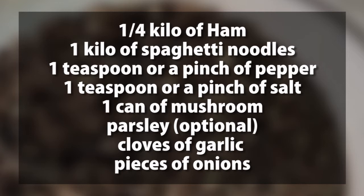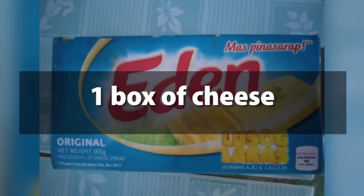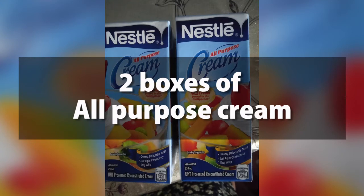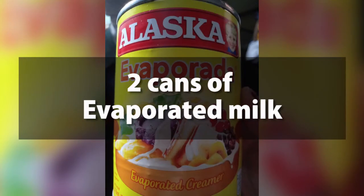We also have parsley — optional if you can find it in the market — cloves of garlic, pieces of onions, one box of cheese, two packs or two boxes of Nestle cream, and two cans of evaporated milk.